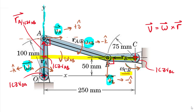You can map out all the different velocity directions without actually knowing any of the numbers, giving you pre-conceptual understanding of how the system moves before jumping into numerical computations. If you're solving with ICZVs, this diagram is integral because the technique gives you scalar values but not directions. It's also a great bonus for relative velocity and vector algebra because you can cross-check your cross products.